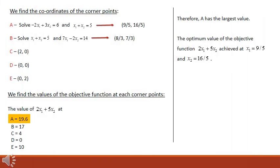Using the alternative method, the coordinates of A are found by solving constraints 1 and 3, giving (9/5, 16/5). B is the intersection of constraints 2 and 3, giving (8/3, 7/3). C is (2, 0), D is the origin (0, 0), and E is (0, 2). The values of 2x₁ plus 5x₂ are: at A it is 19.6, at B it is 17, at C it is 4, at D it is 0, and at E it is 10. Therefore, A has the largest value, and the optimum is achieved at x₁ equals 9/5 and x₂ equals 16/5.